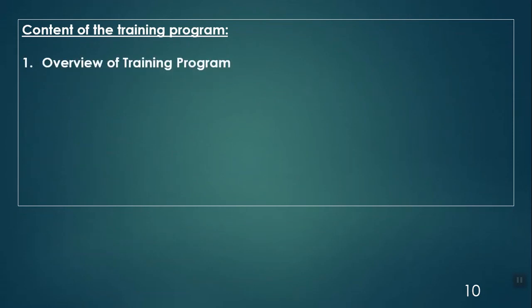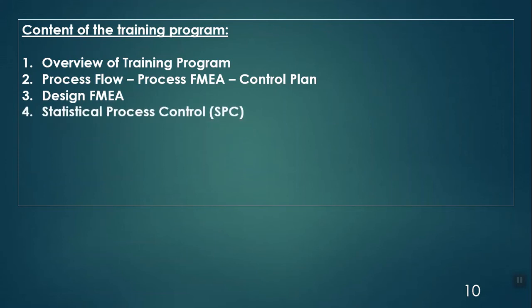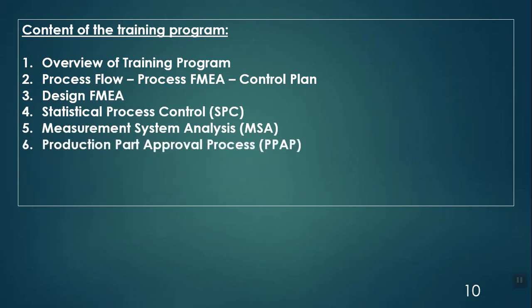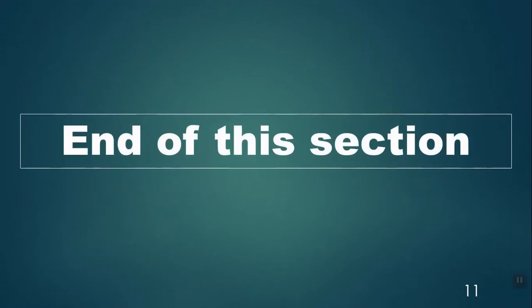Let us have a look at the content of the training program. The sections are: overview of training program (this section), then section 2 covering process flow, process FMEA, and control plan combined, then design FMEA, then statistical process control, then measurement system analysis, then production part approval process, and finally advanced product quality planning. There are quizzes at the end of each section from section 2 to section 7. This is the end of the overview section — welcome to this course once again, and now please proceed to the sections of the course.